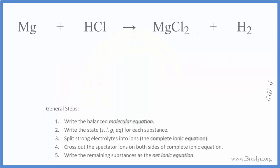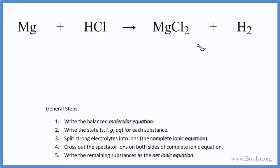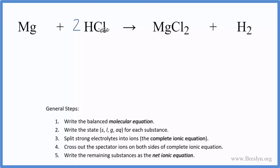Let's start with a pretty simple one. This first equation is a single displacement reaction — this is the molecular equation where everything is in compounds, nothing broken up into ions. We need to balance it first. If I put a 2 as the coefficient in front of HCl, I'll have two hydrogens, two chlorines, and one magnesium. This is balanced.